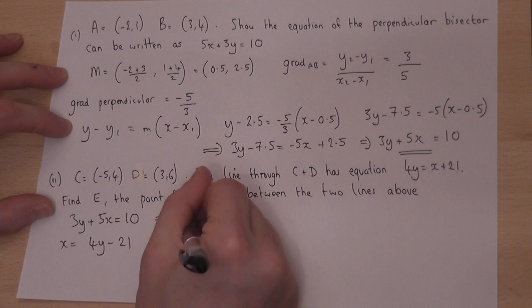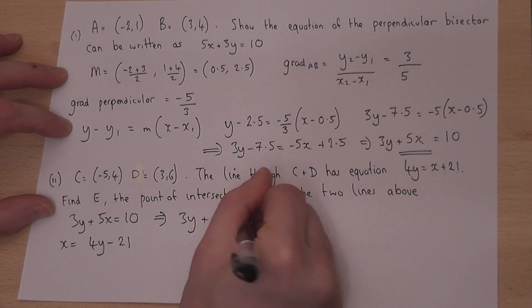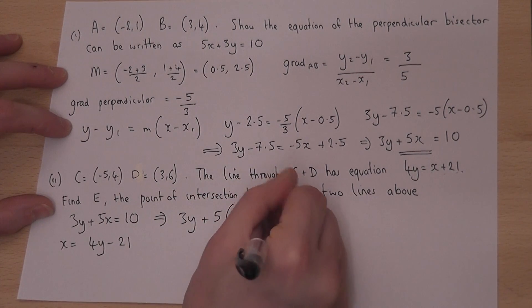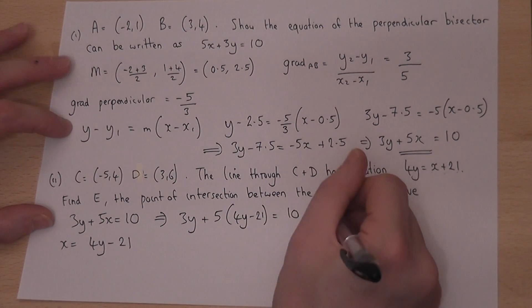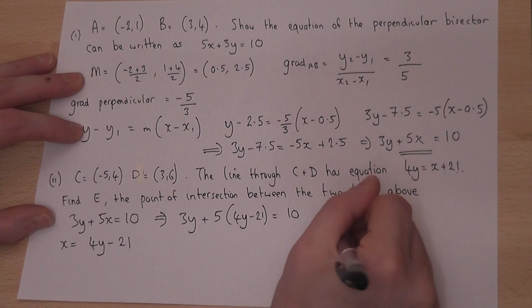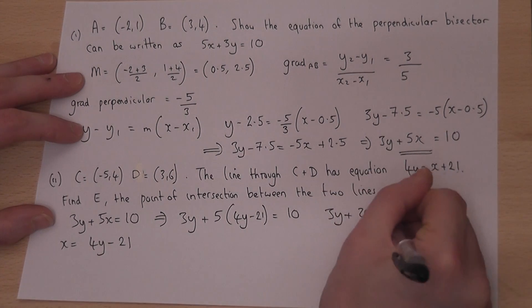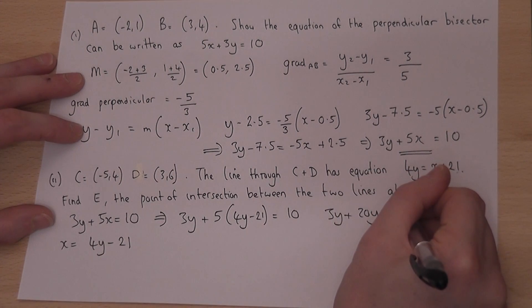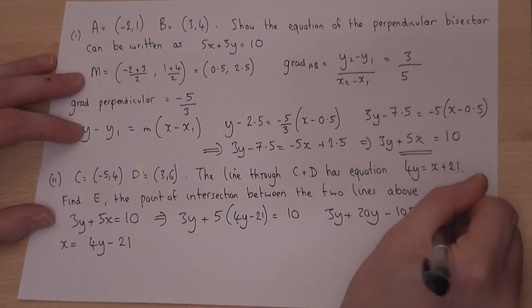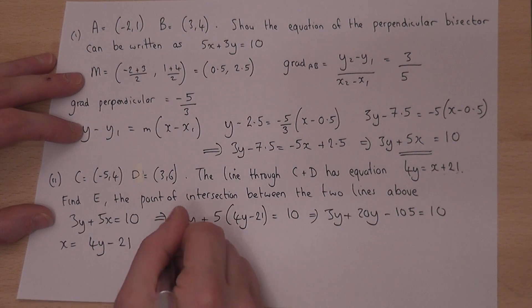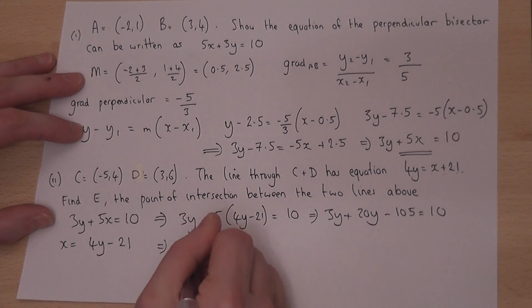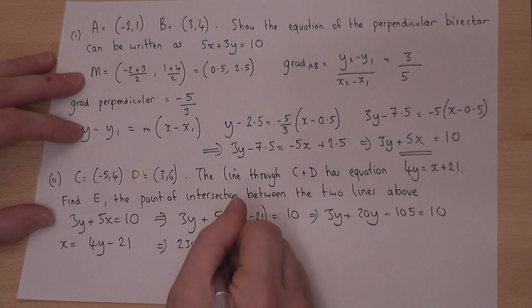So 3y plus 5 lots of 4y minus 21 equals 10. Expand. So 3y plus 20y take 105 equals 10. So add them together. 23y equals 115.